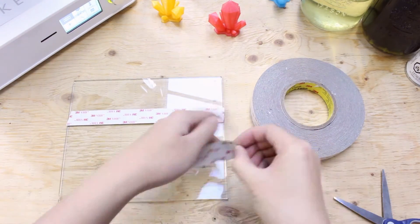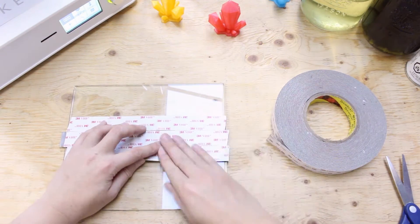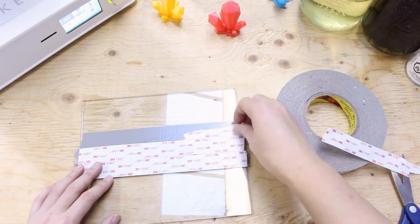Let's apply the tape onto the glass. Take three strips and place it onto the bed. Done.